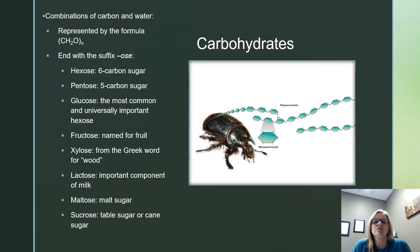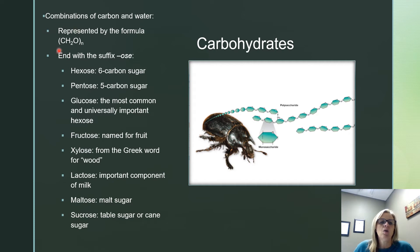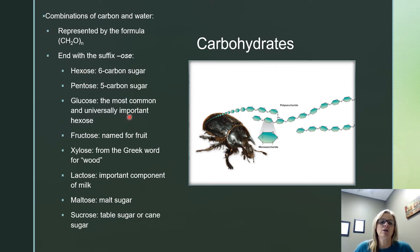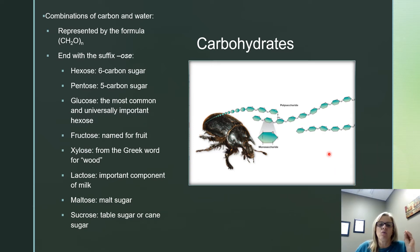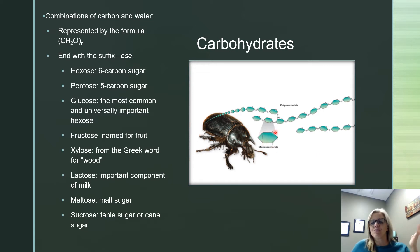Carbohydrates are combinations of carbon — which is where we get the portion of the word 'carbo' — and water, which is where 'hydrate' comes from. Carbohydrates are represented by the formula CH₂O, where N is the number of those units. The sugars listed here are important monosaccharides: hexose meaning six carbons, pentose meaning five carbons. Glucose is the most common and universally important hexose. Fructose is fruit sugar.